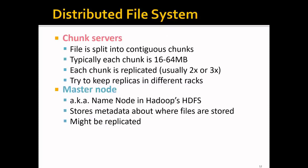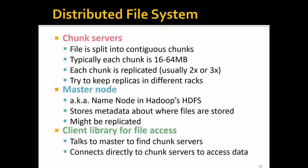In order for the chunk servers to communicate with each other, you will need a master node — also called a NAM node in HDFS. This master node stores metadata about where files are stored, for example where the first or second chunk of file C is stored, or where the third chunk of file D is. These master nodes may be replicated to avoid a single point of failure. To access data, a client library talks to the master node to find the chunk servers, and then connects directly to the chunk servers to access the data — so actual data access happens in a peer-to-peer fashion.